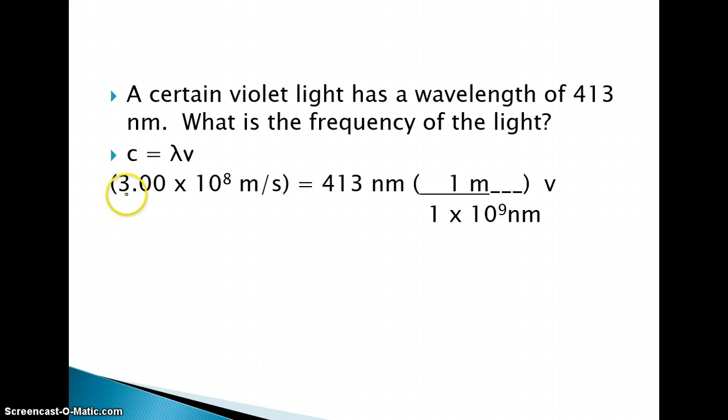So I have my constant, which I'll always have in these problems, 3 times 10 to the 8th meter per second. But then, if you notice, this nanometers is not congruent with this meters. So I need to do a step here where I convert my nanometers to meters, just like we've been doing in unit conversions. And then I can solve for my frequency. We cannot do this problem if we don't do that, because these meters here are incongruent with these nanometers here. So we need to have both of our units in meters.